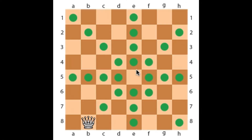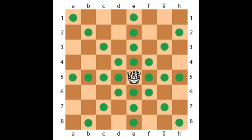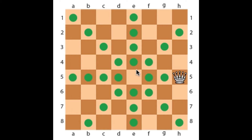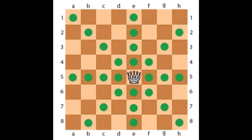Let's go to the most powerful piece on the chess board — it's the queen. She can move as many squares as she desires, in any direction. She can move vertically, horizontally, and diagonally.